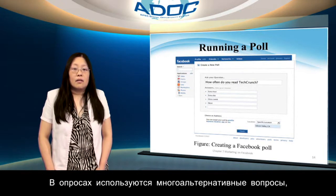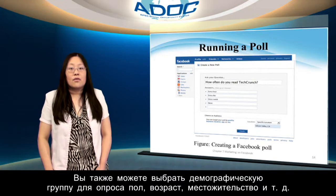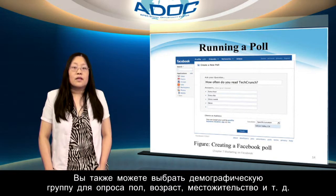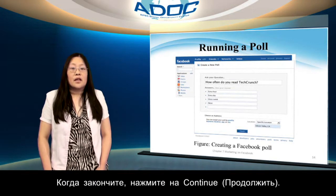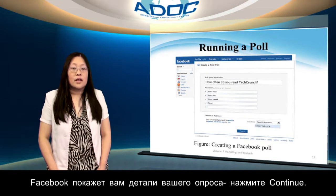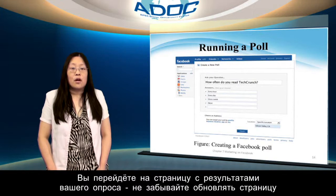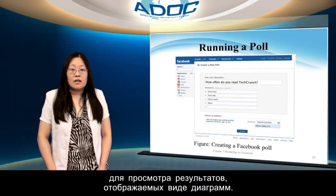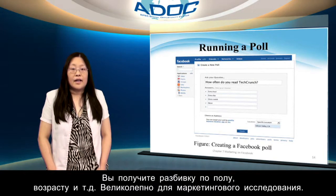Polls employ multiple choice questions, so enter your question and answers. You can also select the demographics you want to poll: sex, age, location, and so on. When you are ready, click the Continue button. Facebook shows you the details of your poll — click Continue again. Facebook will bring you to the results page where you can keep refreshing to see results displayed as bar graphics. You also get a breakdown by age, sex, and so forth — great for marketing research.